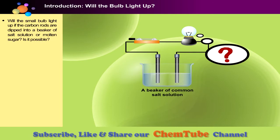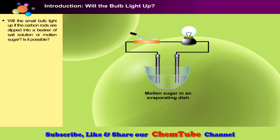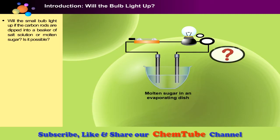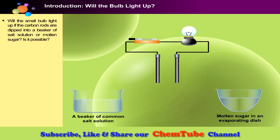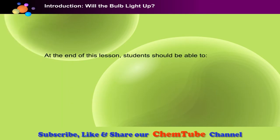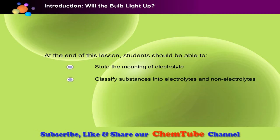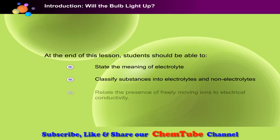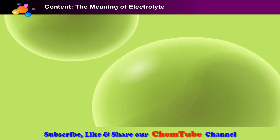Will the small bulb light up if the carbon rods are dipped into a solution or molten substances? At the end of this lesson, students should be able to: state the meaning of electrolyte, classify substances into electrolytes and non-electrolytes, and relate the presence of freely moving ions to electrical conductivity.